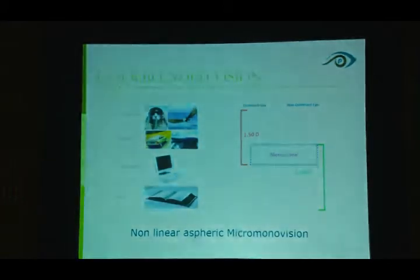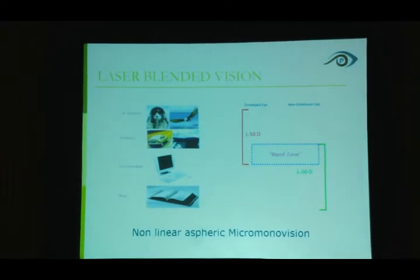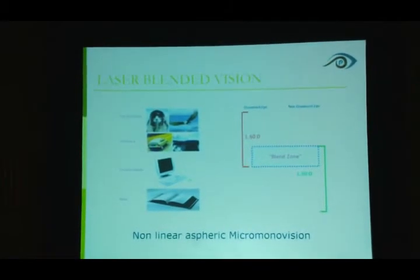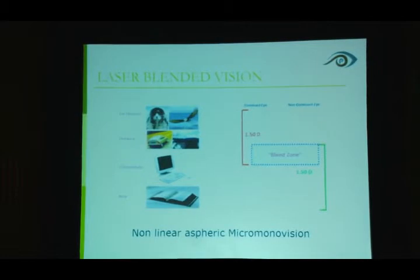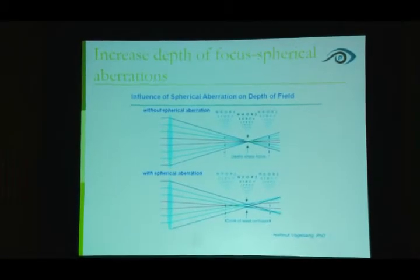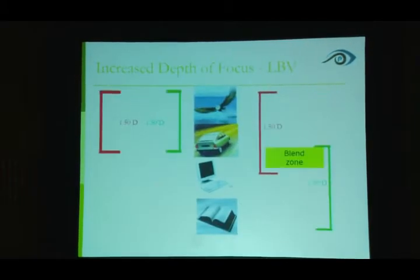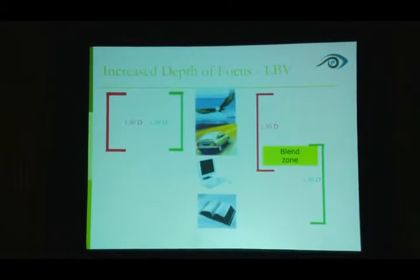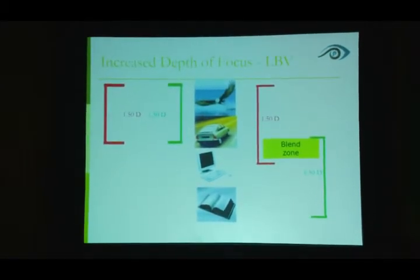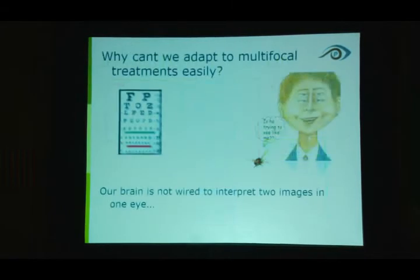In laser blended vision, we make the dominant eye emmetropic and the non-dominant eye myopic by 1.5 diopters. The blend zone is the zone where the image from the dominant and non-dominant eye meets, and binocularity is retained. Depth of focus is increased by creating controlled spherical aberration in both dominant and non-dominant eyes.